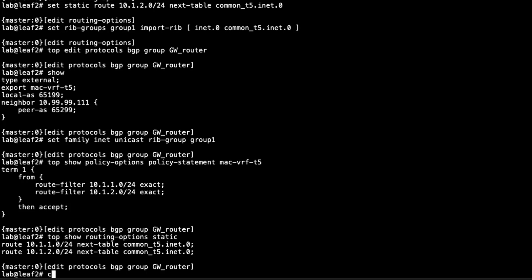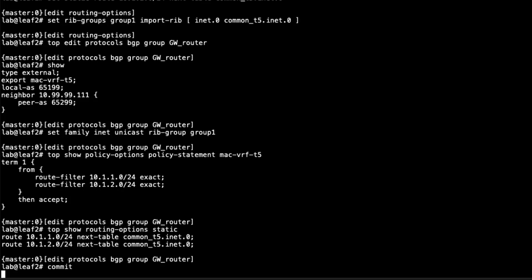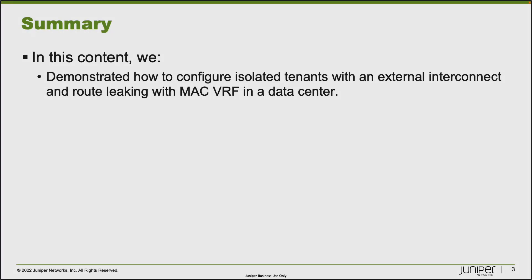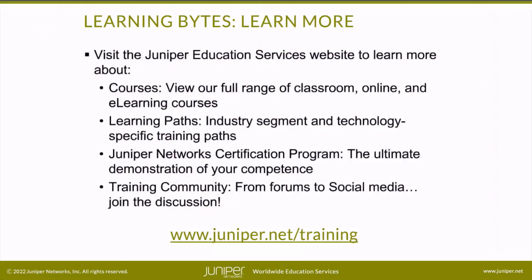Let's commit the configuration on Leaf 2 — it commits just fine. The configuration is now complete for this learning byte. We demonstrated how to configure isolated tenants with an external interconnect and route leaking with MacVRF in a data center. Thanks for watching — visit the Juniper Education Services website to learn more.